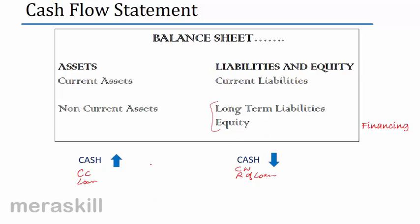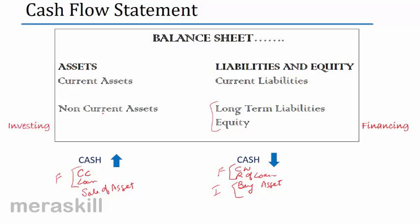Sale of a non-current asset — say furniture or old machinery disposed as scrap — will be an inflow of cash and is an investing activity. If you buy an asset — a computer, machinery, furniture, fittings — from which you get benefit over a longer period, it is reflected under non-current assets, and the outflow of cash is called an investing activity.